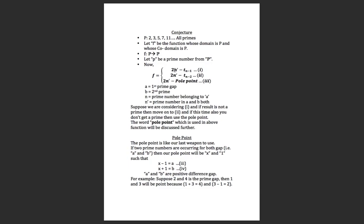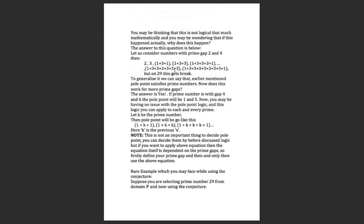You can use the pole point in the third equation, but first go through the first and second equations. There are two formulas for finding the pole point: one is the basic pole point and x is our variable pole point. As discussed, a and b are prime gaps and x is the pole point. Note that x is not the average of a and b.